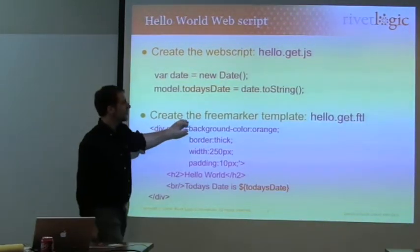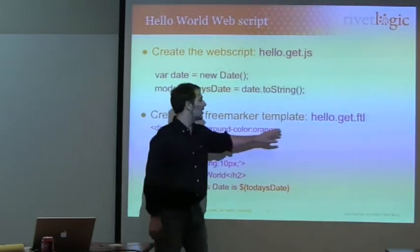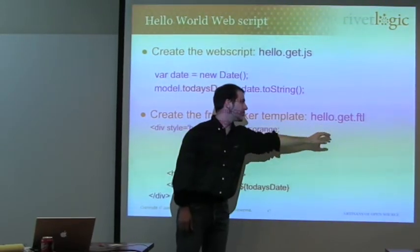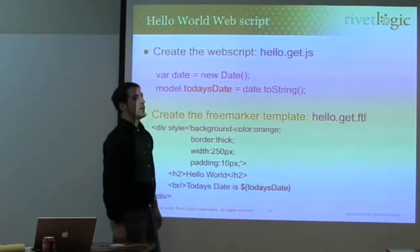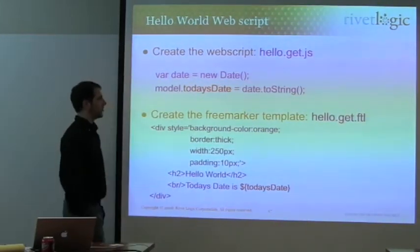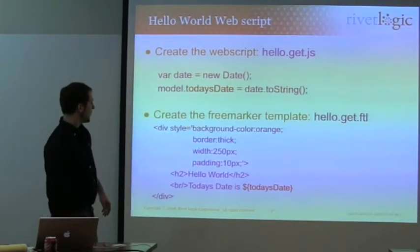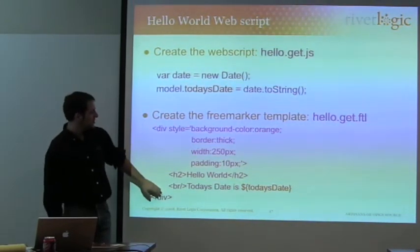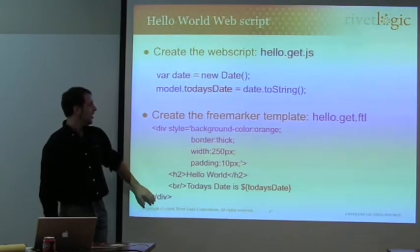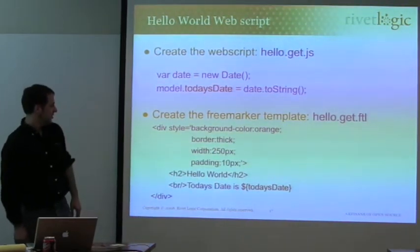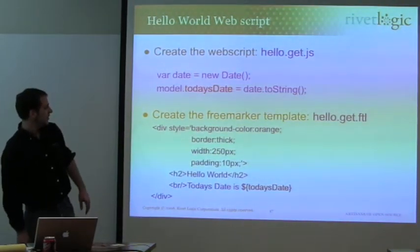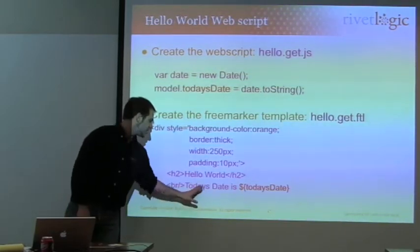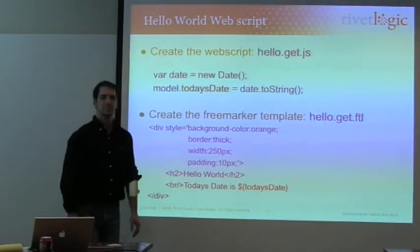You have a FreeMarker template which again follows the same convention: hello dot hdb, the method — which in this case is get — and then ftl, which tells the engine that it's a FreeMarker template. And we're going to make a really simple presentation that says hello world and pronounces today's date.